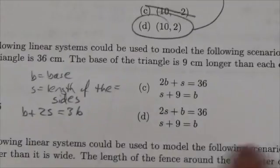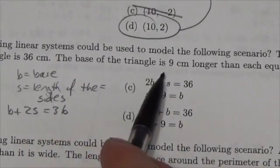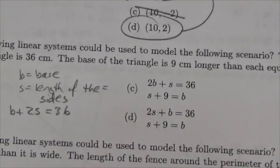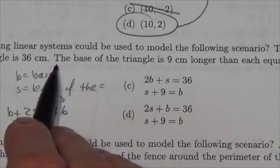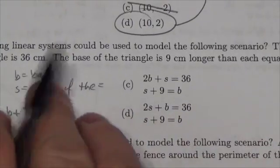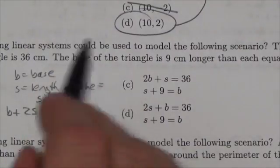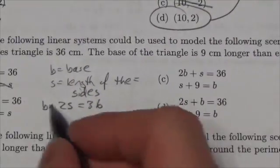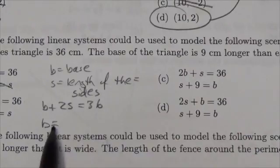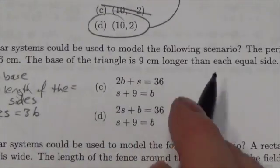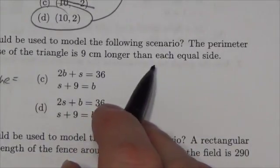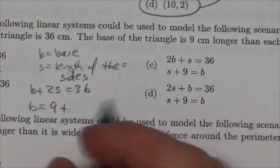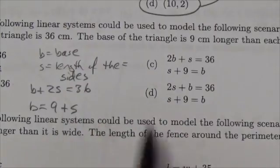The final question here says the base of the triangle is, now I know some people have troubles coming up with equations here, but really it's just a simple matter of interpreting this sentence here. So the base of the triangle, that's the letter B, is, that's an equal sign, nine centimeters longer than each equal side, well that's nine plus the S there, so B is equal to nine plus S.